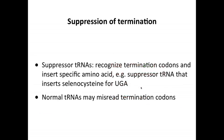Those are two examples of suppression of termination. Suppression can involve a specific suppressor tRNA that recognizes termination codons and inserts a special amino acid — for example, selenocysteine is used to suppress UGA codons. These are rare tRNAs in cells, but they do exist. Alternatively, normal tRNAs may misread termination codons and insert an amino acid, and this seems to be enhanced when secondary RNA structures near the terminator cause ribosome pausing.